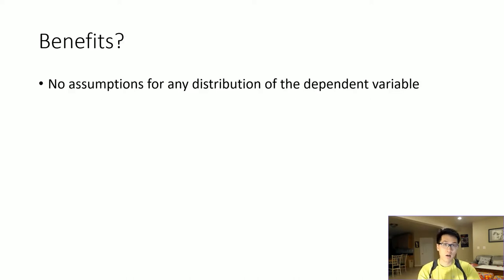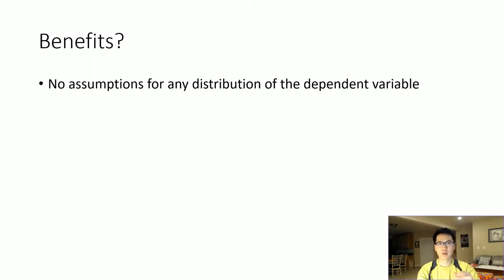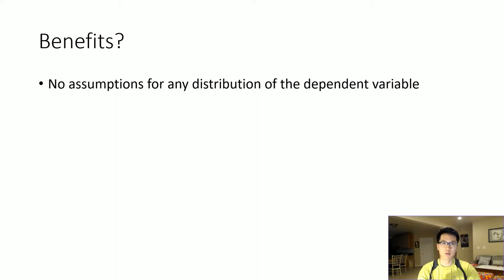First, we don't really need to have any assumptions for the distribution of the dependent variable. So it can be normal, it can be Bernoulli, or it can be something else — it really doesn't matter. We don't need to make the strict assumptions that linear regression requires, such as the normality assumption for each of its terms.